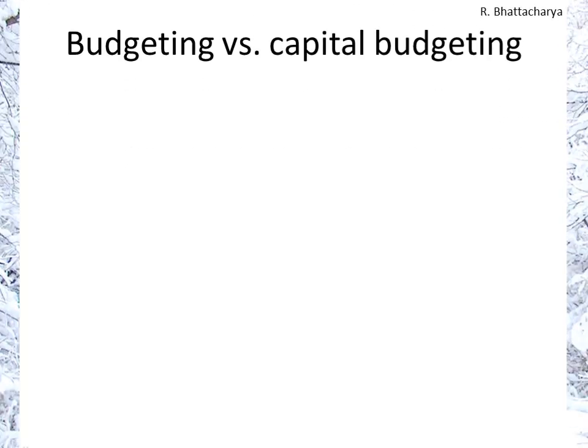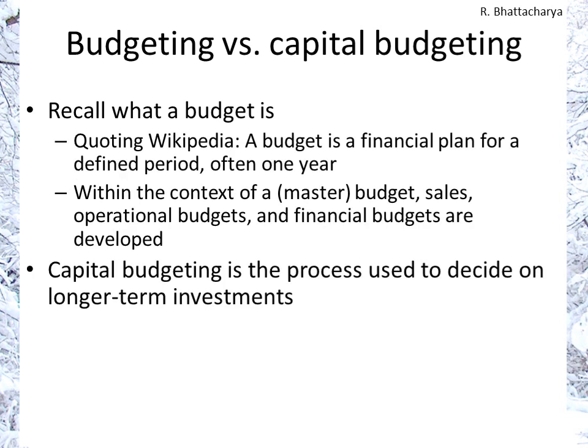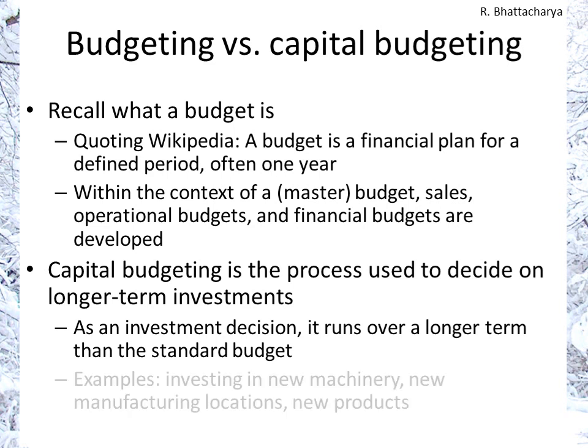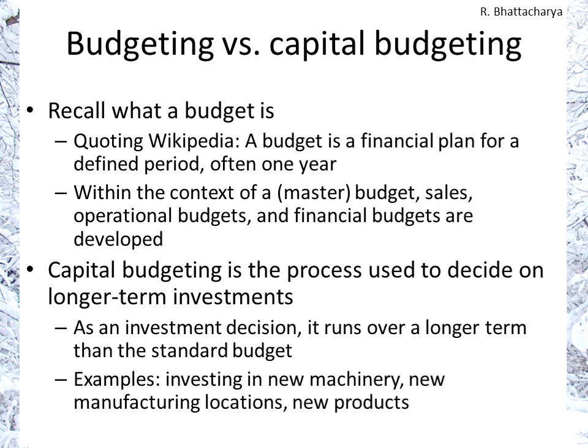Starting off with budgeting, let's recall what a budget is from our financial accounting courses. Quoting Wikipedia, a budget is a financial plan for a defined period, often one year. And within the context of a budget, you're going into operational budgets — sales, costs, et cetera — and financial budgets, which are developed.